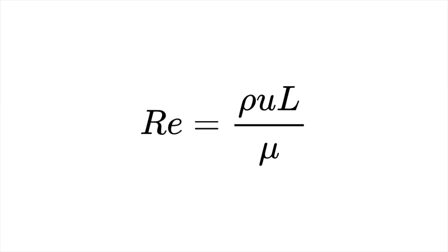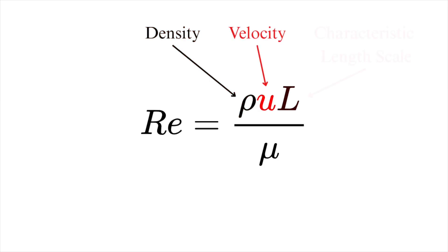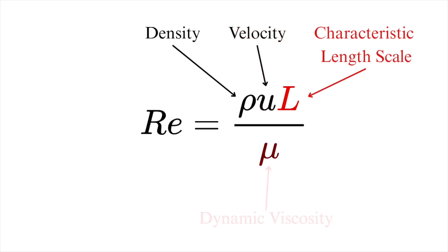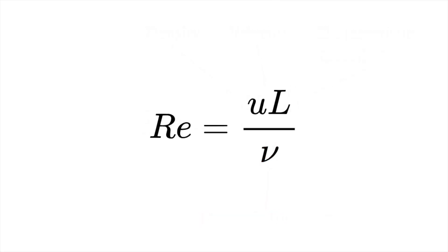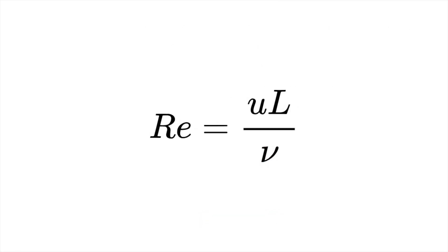What do each of the terms actually mean? Rho is the density of the fluid, u is the velocity of the fluid, l is a characteristic length scale of the fluid, and mu is the dynamic viscosity. You might have also seen the Reynolds number defined with a new term called the kinematic viscosity.